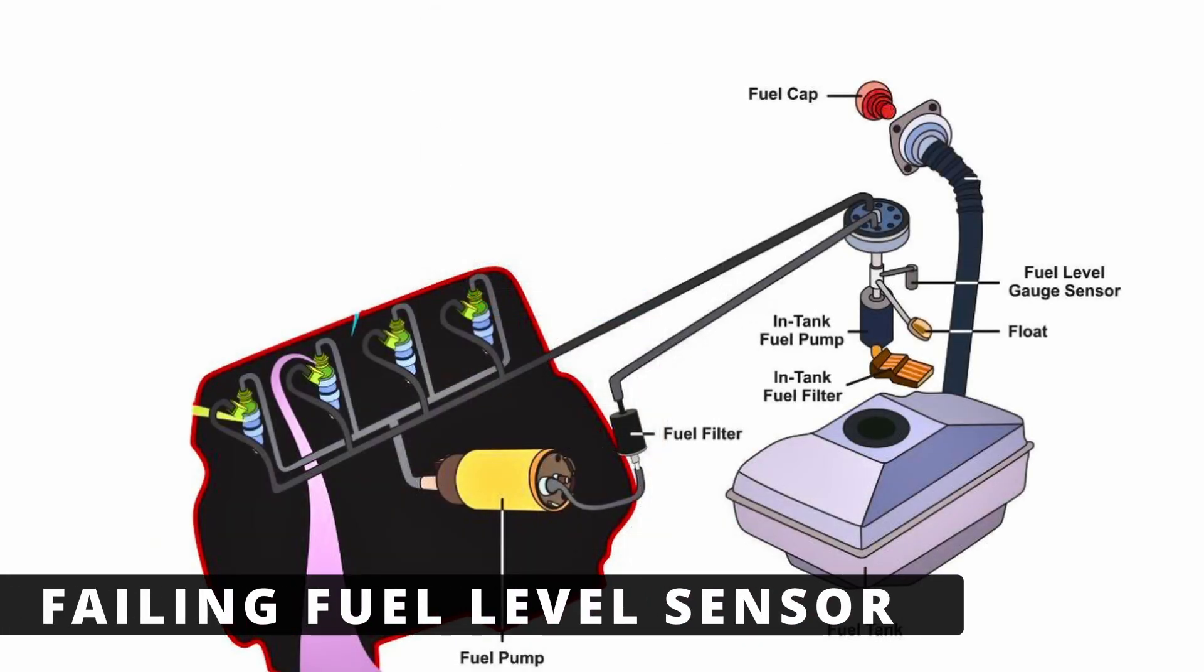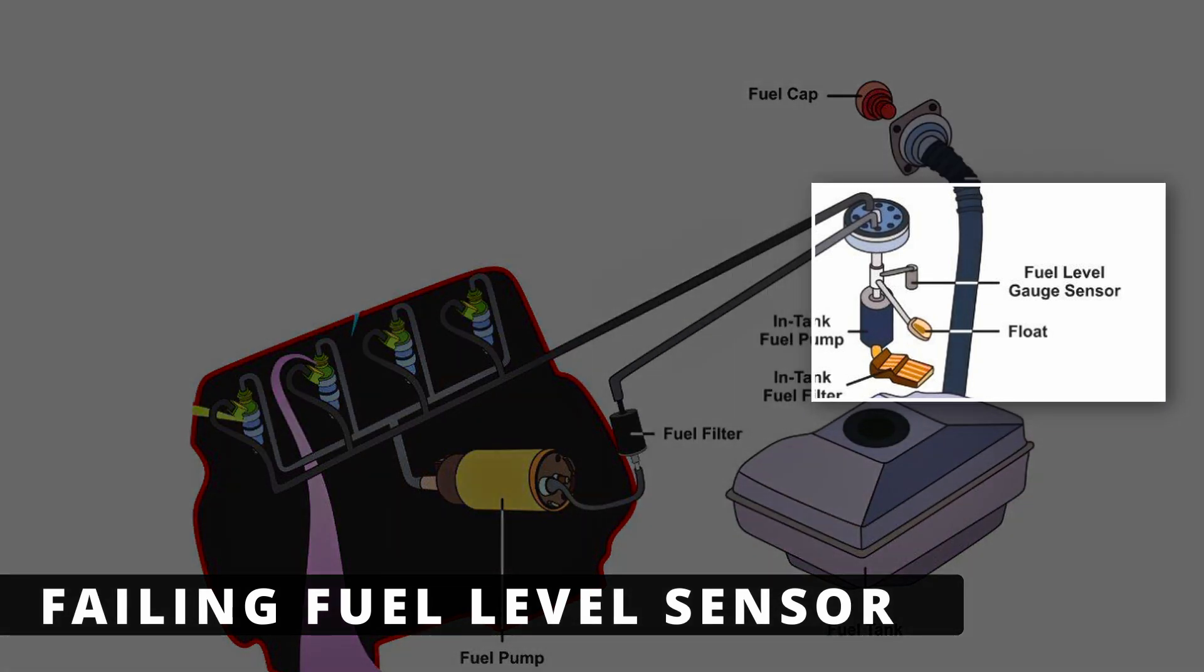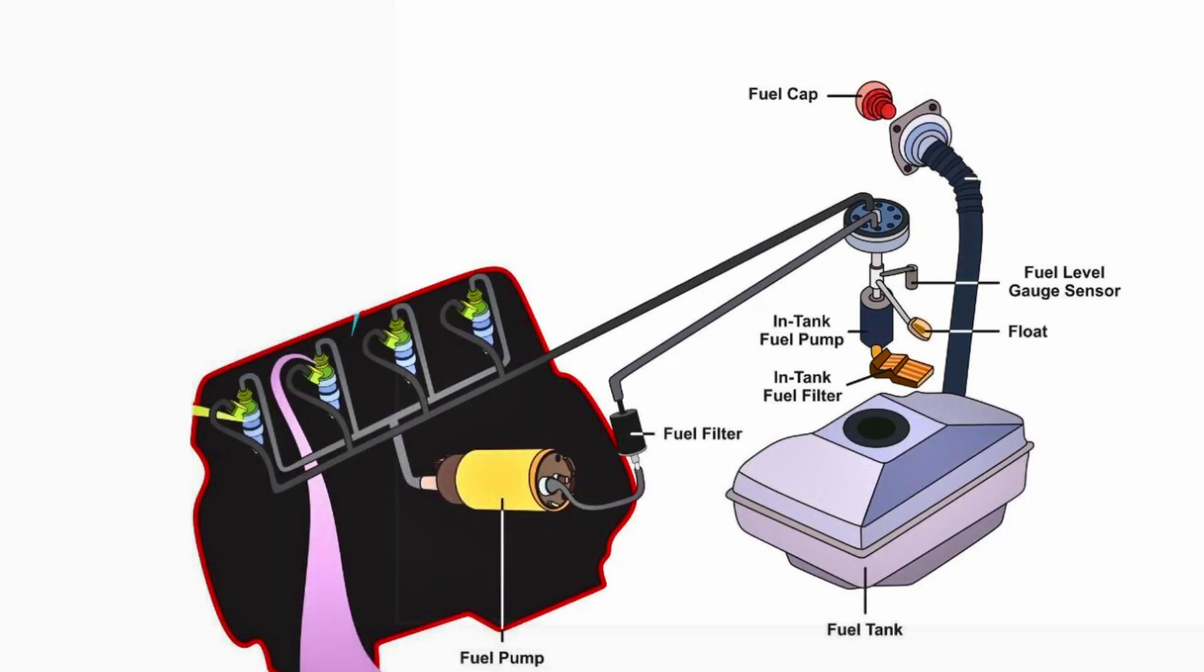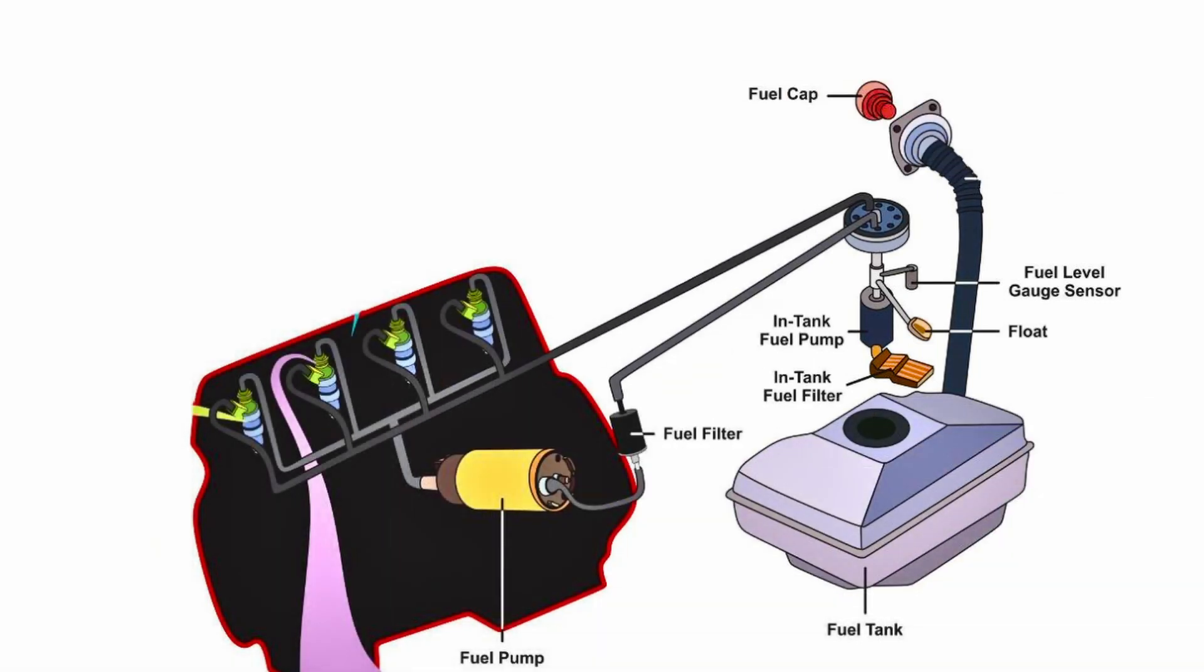One possible cause is a failing fuel level sensor which is located inside the fuel tank and attached to the fuel pump assembly. Over time, the sensor's float or resistance contacts can wear out, causing erratic or incorrect fuel level readings. If your gas gauge suddenly jumps around or always shows full or empty, this could be the issue.